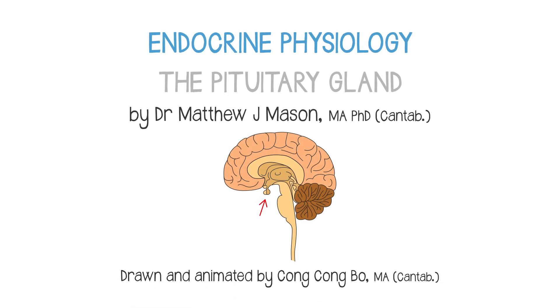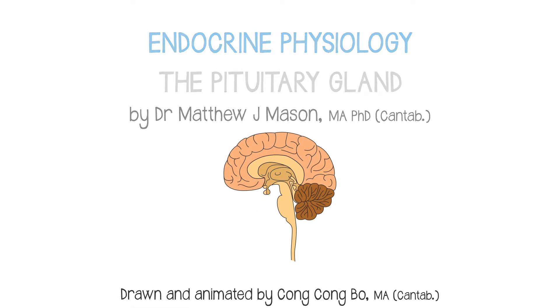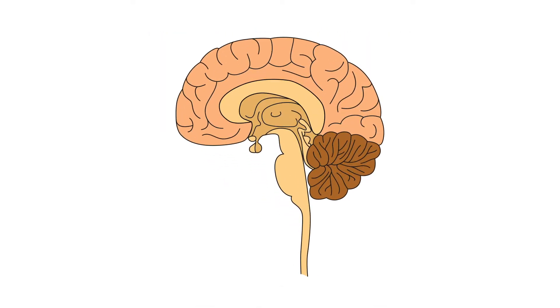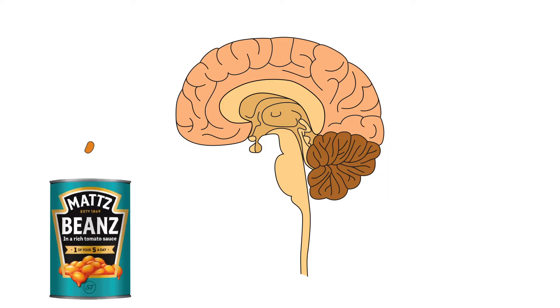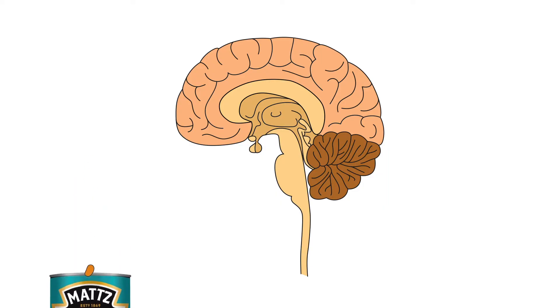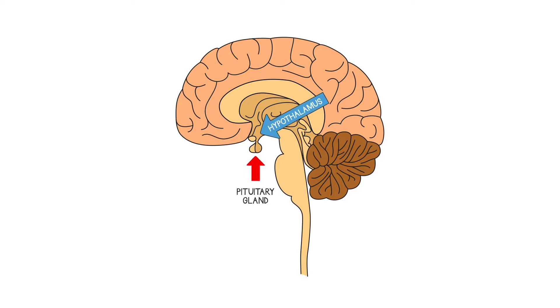The pituitary gland is a very important ductless gland which releases a number of different hormones into the blood. About the size of a baked bean, it's found just below the base of your brain and it's controlled by the hypothalamus just above.